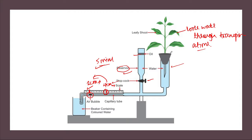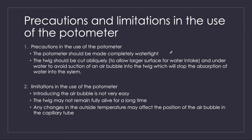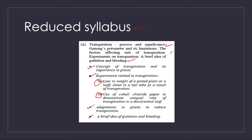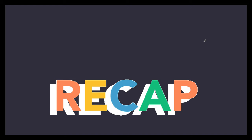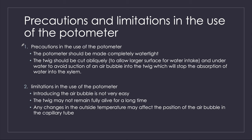Now we'll talk about precautions and limitations of the potometer — these are very important. In the syllabus, for Ganon's potometer we need only its limitations, though precautions may also be tested. The limitations are definitely in the syllabus. So let's learn both. The first precaution is that the potometer should be made completely watertight, so no extra water enters from outside.